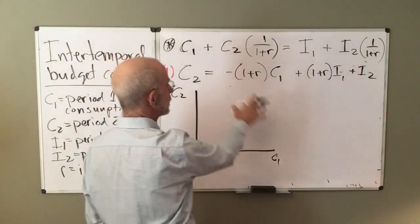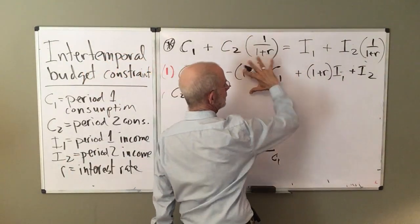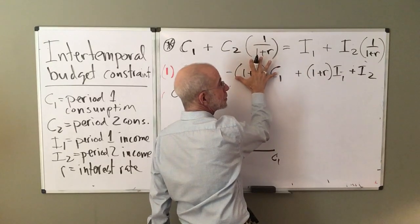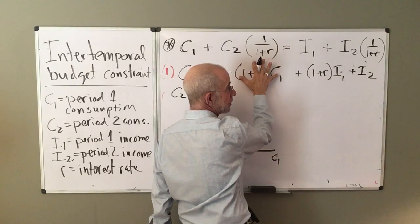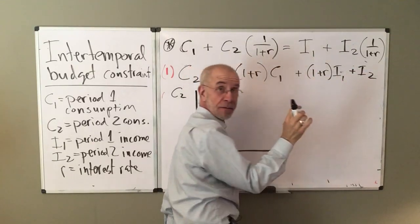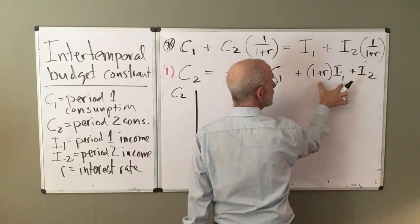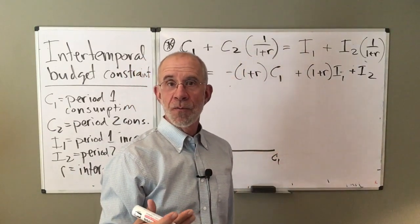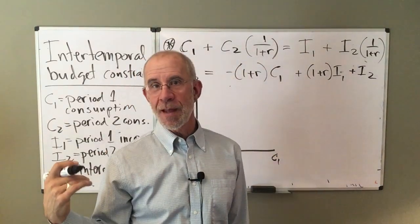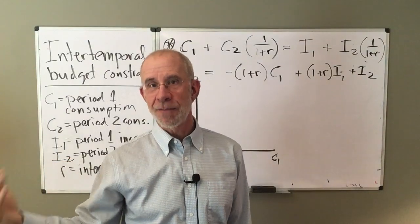So what I've got here is I'm going to put C one on the horizontal axis and I'm going to put C two on the vertical axis. And I'm going to say, well, what's the maximum amount of consumption I could get in period two if I didn't consume anything today?